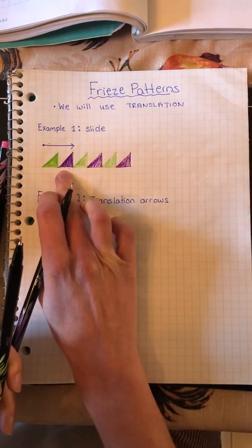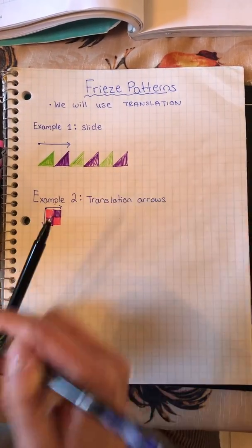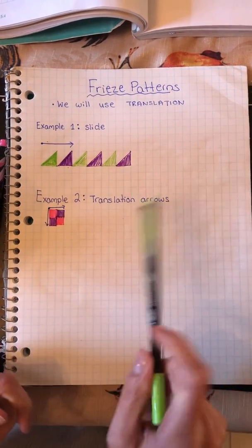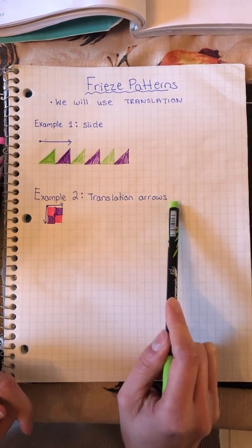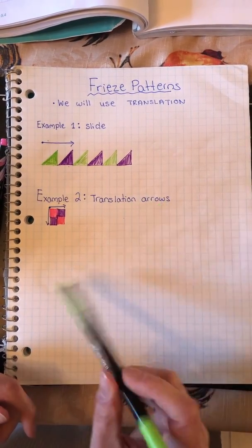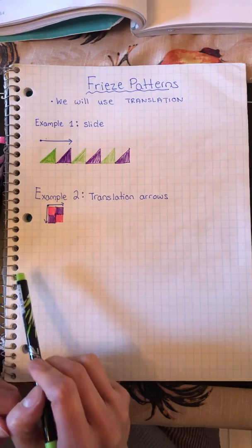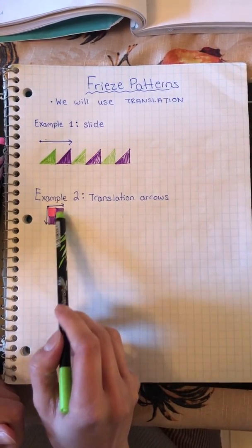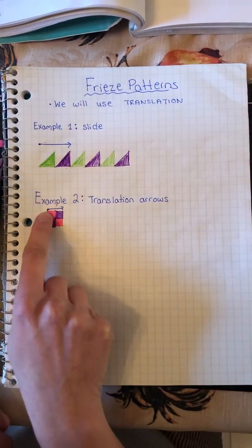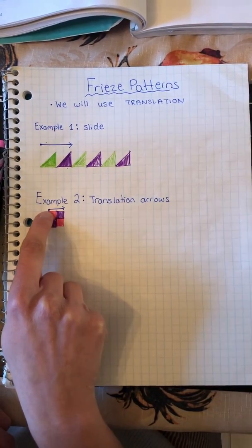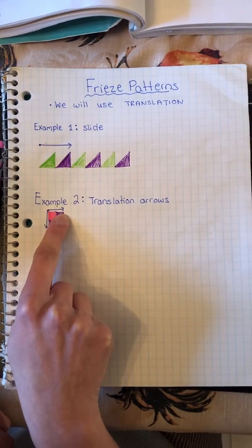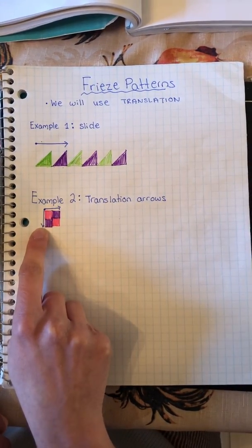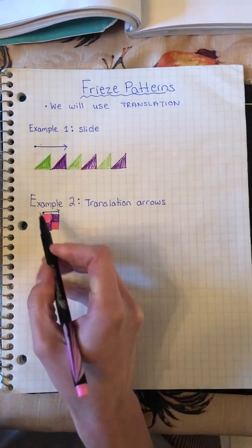Our second type of freeze pattern is where we follow what the translation arrows tell us to do. Here is our pattern: I have pink square, pink square, purple square, purple square. That's my pattern. The arrow up top says my next shape needs to be two squares over and two squares down. So let's take a look at this first little pink square.